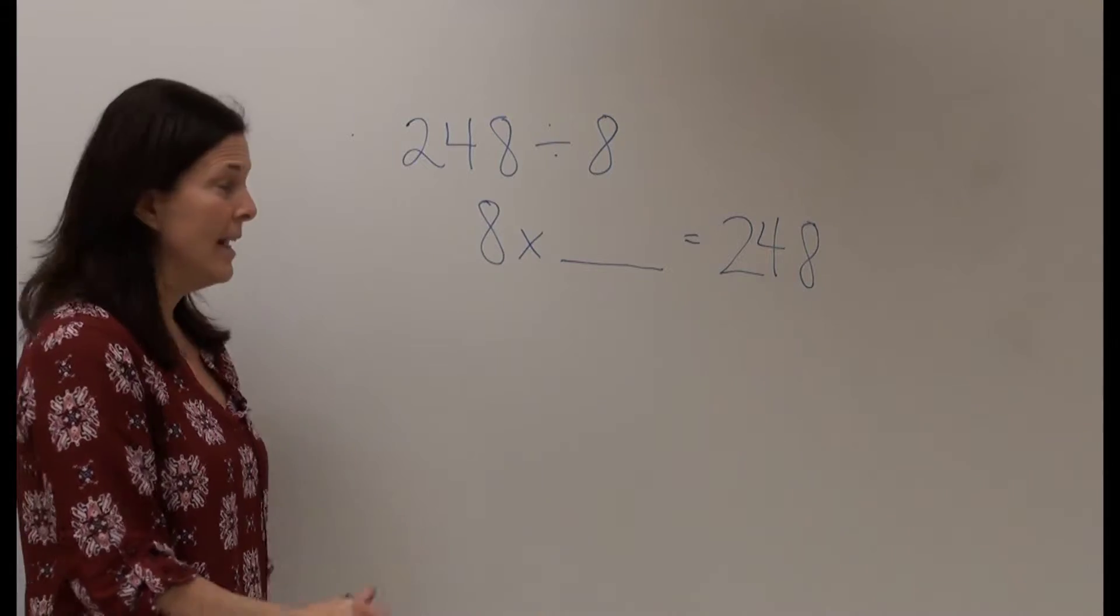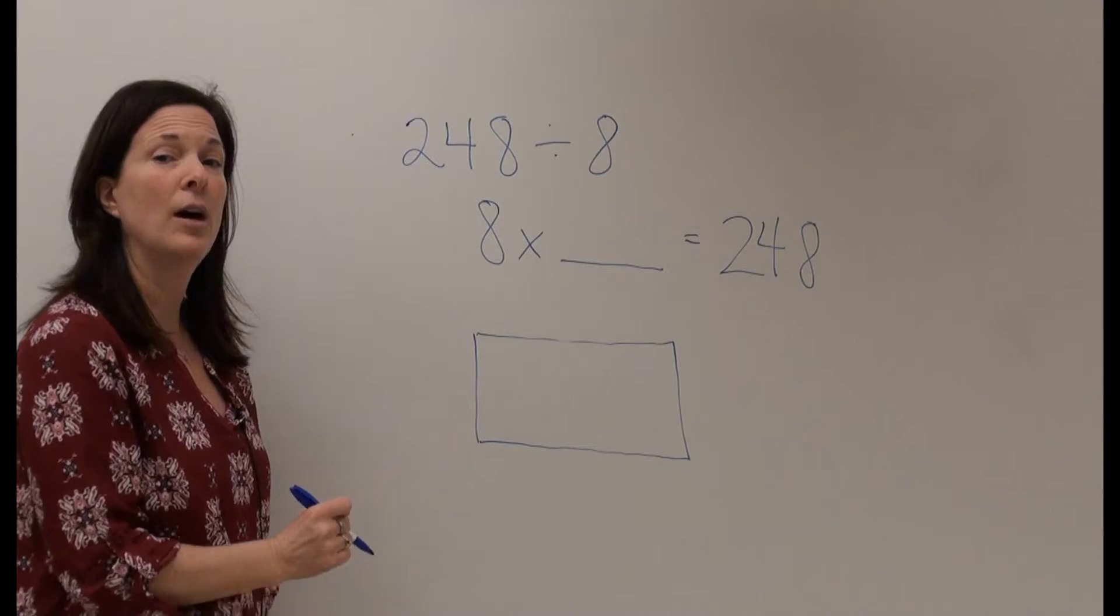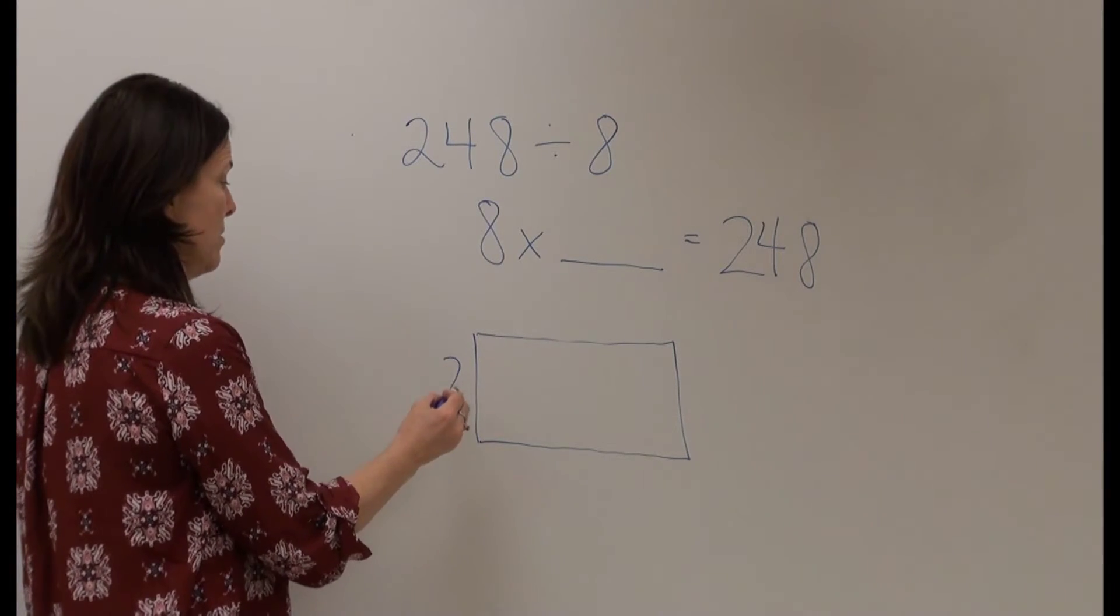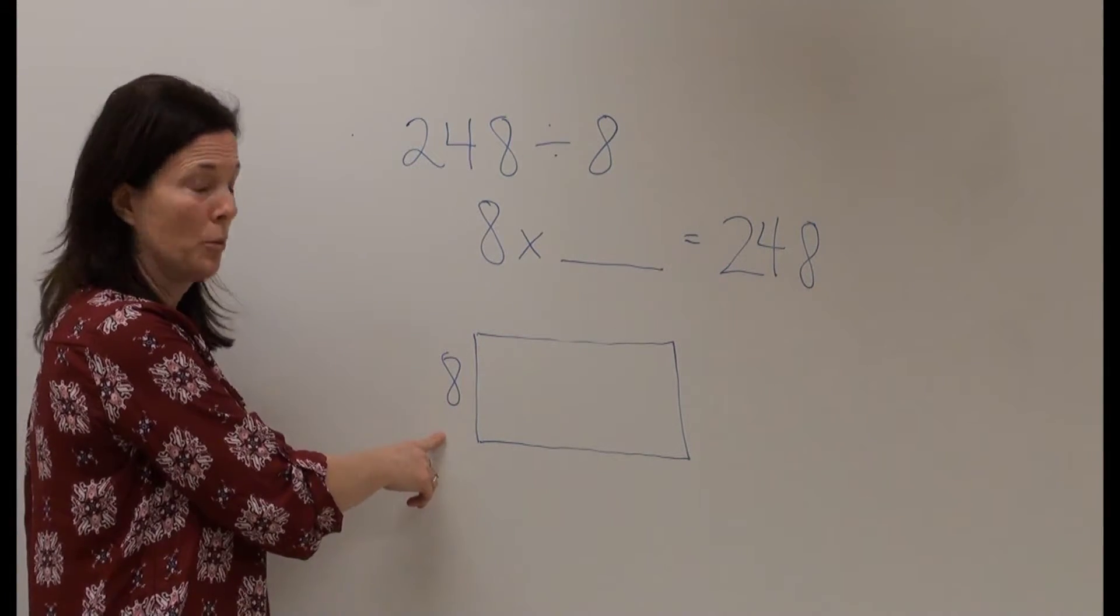So I'm going to begin by drawing a rectangle. To the left of the rectangle I'm going to draw my 8 because I am dividing 248 students into 8 rows.